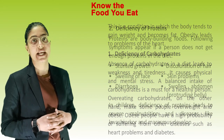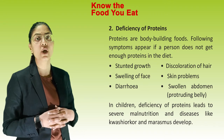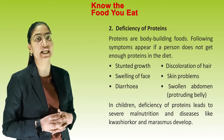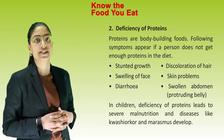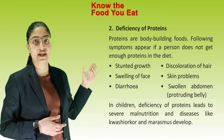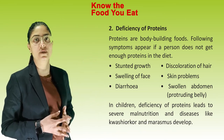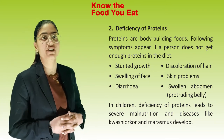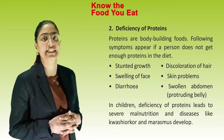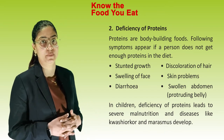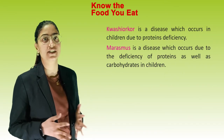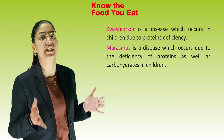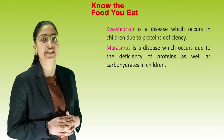Deficiency of carbohydrates: Absence of carbohydrates in a diet leads to weakness and tiredness and causes physical and mental stress. A balanced intake of carbohydrate is essential for a healthy person. Overeating carbohydrates makes some people overweight and obese, with high probability of suffering from heart problems and diabetes. Deficiency of protein: Proteins are body-building foods. Symptoms of protein deficiency include stunted growth, swelling of face, diarrhea, discoloration of hair, skin problems and swollen abdomen. In children, deficiency of protein leads to severe malnutrition and diseases like Kwashiorkor and Marasmus develop. Kwashiorkor occurs due to protein deficiency, while Marasmus occurs due to deficiency of both protein and carbohydrates.